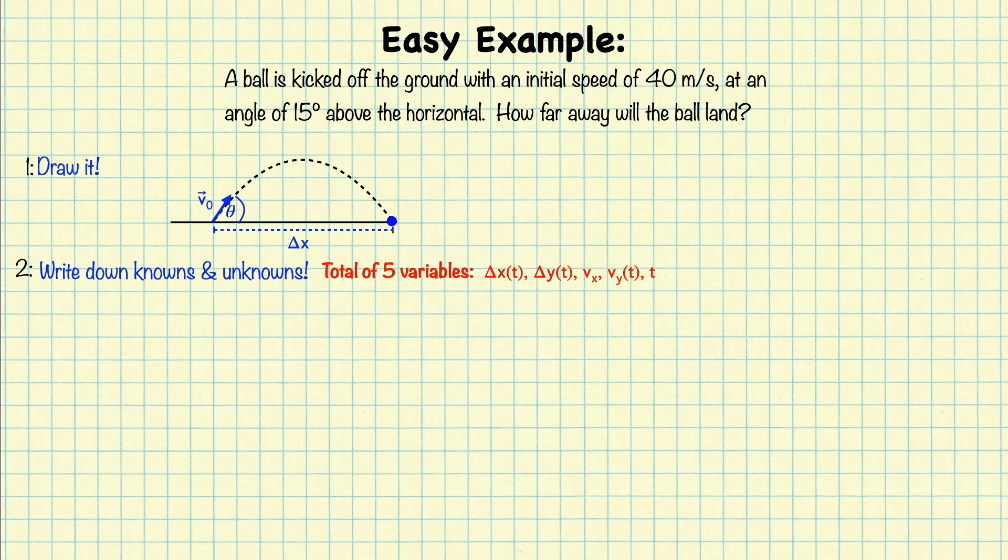Now what are we told in this problem? First we're told that the initial velocity is 40 meters per second at an angle theta of 15 degrees above the horizontal. We're not given any information involving the time, nor do we know the distance the ball has traveled. Now recall that velocity is a vector. It's an arrow that points in some direction. And that arrow has an x-component and a y-component. Given that we're told the magnitude of the vector, which is the speed, and the angle at which it's pointing, theta, we can find that the x-velocity is equal to v-naught cosine theta, and the initial y-velocity is equal to v-naught sine theta.